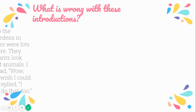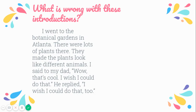Okay, what's wrong with this one? I went to the botanical gardens in Atlanta. There were lots of plants there. They made the plants look like different animals. I said to my dad, 'Wow, that's cool. I wish I could do that,' and he replied, 'I wish I could do that, too.' What's wrong? That's right — this is starting to sound like a narrative story rather than an expository or informational text.